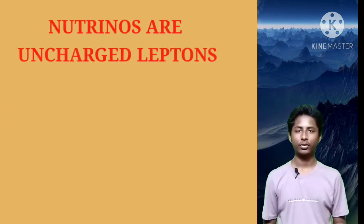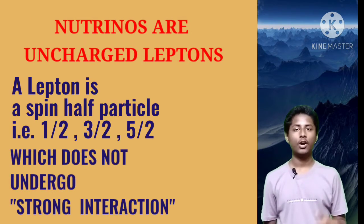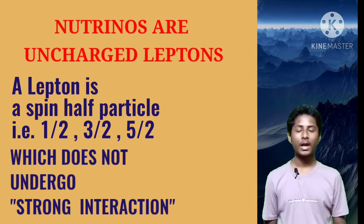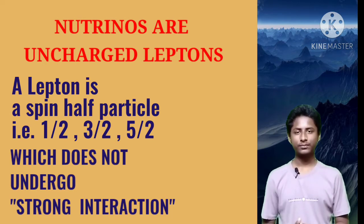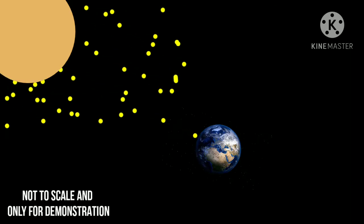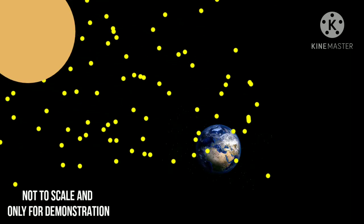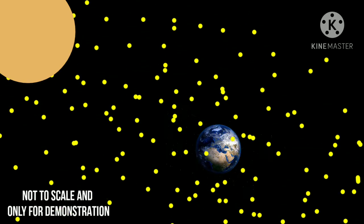Neutrinos are uncharged leptons. A lepton is a group of elementary particles of half-integer spin that does not undergo strong interaction. As mentioned, neutrinos only interact with gravity and the weak force, which makes them very hard to detect. About three million billion solar neutrinos enter every square meter of Earth's surface and pass out to the other side unimpeded.